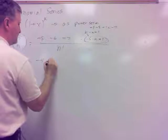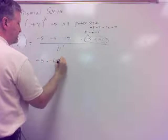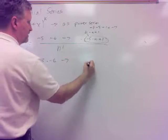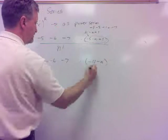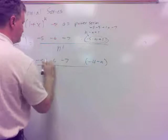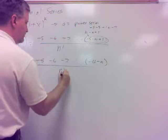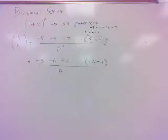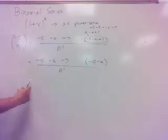So I have negative 5 times negative 6 times negative 7 until I get to negative 4 minus n over n factorial. Well, one other thing I can do to help later with what I want to do with this is, do you notice all these have a negative in them?